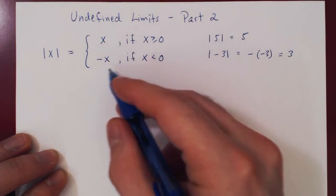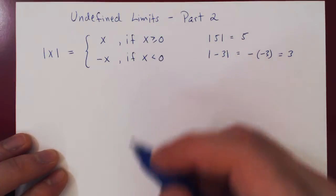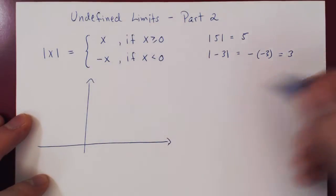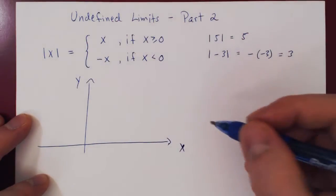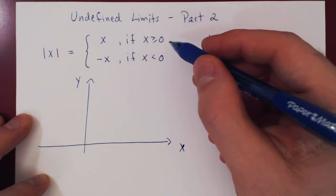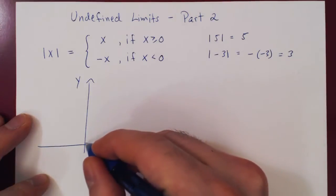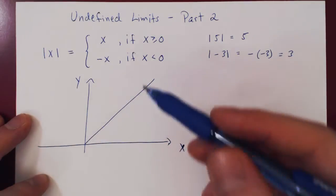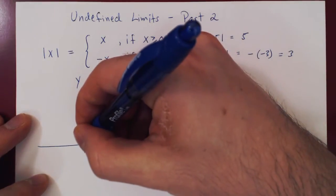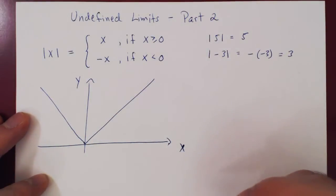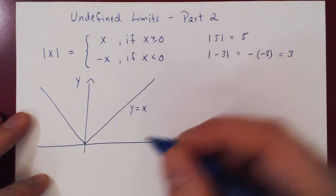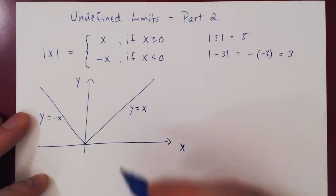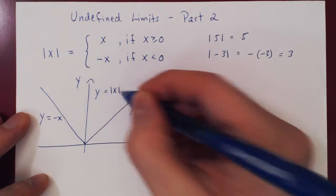Graphically, these are two very simple functions pieced together around x equals 0. For non-negative values of x, the function is simply y equals x — a straight line through the origin with slope 1. For negative x values, the function is y equals negative x, the line with negative slope through the origin. Together, these two branches form the graph of the absolute value of x.